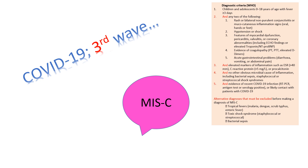Any evidence of coagulopathy — elevated PT, PTT, or D-dimers — and acute gastrointestinal problems like diarrhea, vomiting, or abdominal pain. Along with these, there should be elevated markers of inflammation like raised ESR more than 40 mm in the first hour, raised CRP more than 5 mg per litre, or raised procalcitonin. There should be no other obvious microbial cause of inflammation including bacterial sepsis or staph/streptococcal shock syndromes. And there should be evidence of recent COVID-19 infection via positive RT-PCR, antigen, positive serology, or likely contact with a COVID-19 patient.